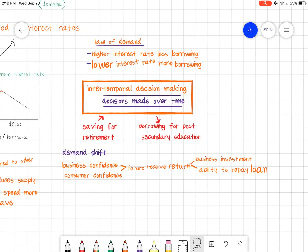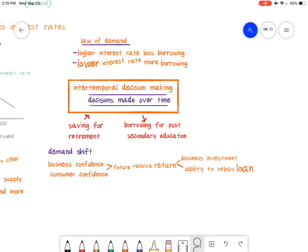So if we look at the law of demand, we can see that a higher interest rate means less borrowing and a lower interest rate means more borrowing. That's essentially what holds true.